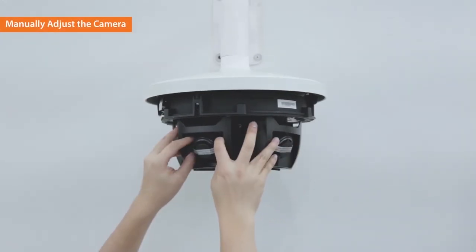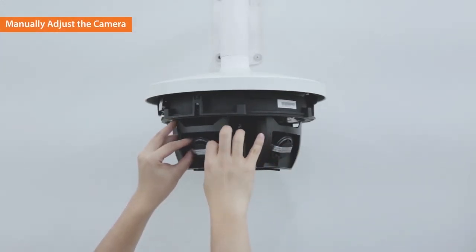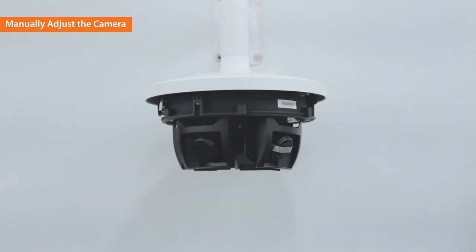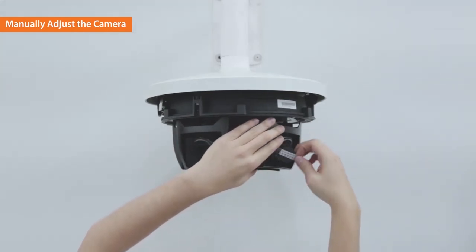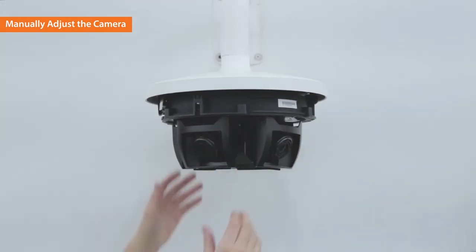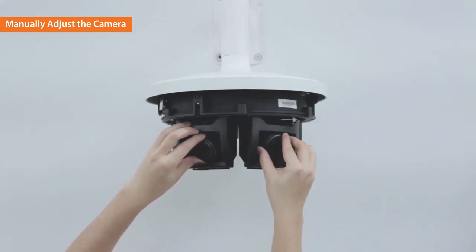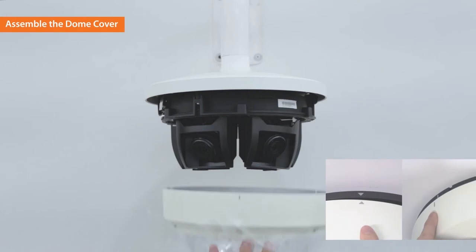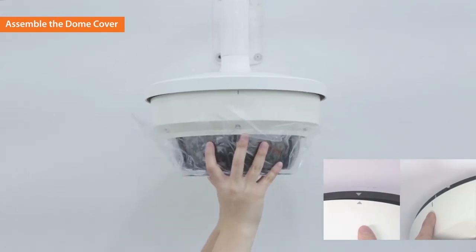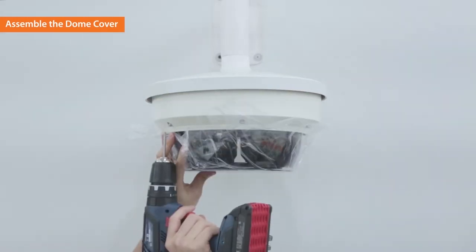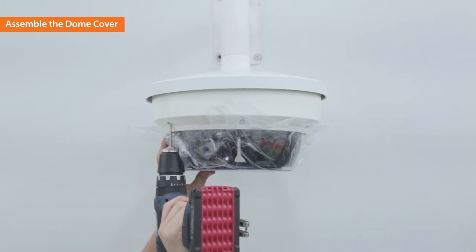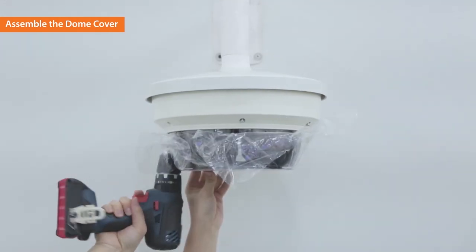Remove the protective seals from the lens and manually adjust the camera direction. Assemble the dome cover and the mounting plate by matching the symbols. Tighten the screws and the outdoor installation of multi-directional camera is completed.